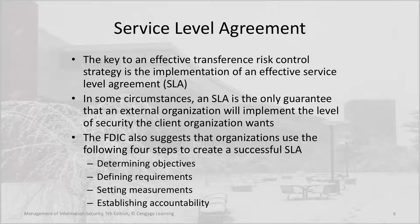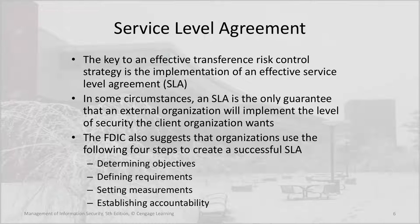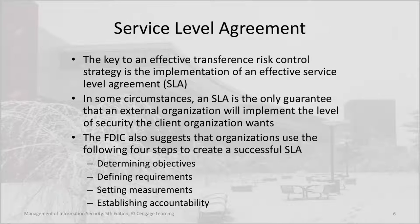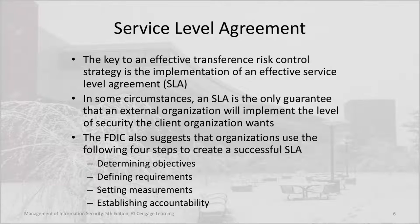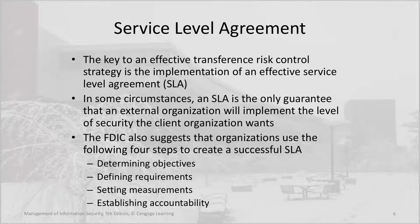The key to an effective transference risk control strategy is the implementation of an effective service level agreement. In some circumstances, an SLA is the only guarantee that an external organization will implement the level of security the client organization wants. The FDIC also suggests that organizations use the following four steps to create a successful SLA: determining objectives, defining requirements, setting measurements, and establishing accountability.